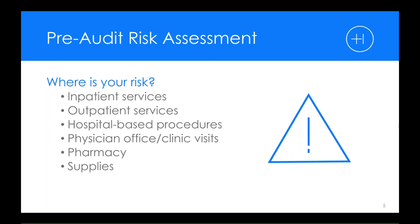For hospitals, there will be things like the MS-DRG. For other providers such as physicians, there will be CPT codes as well. Units of service and other important information will help you factor what services you'll need to audit first. From the very outset, these will help you to identify where the bulk of your risk might lie.